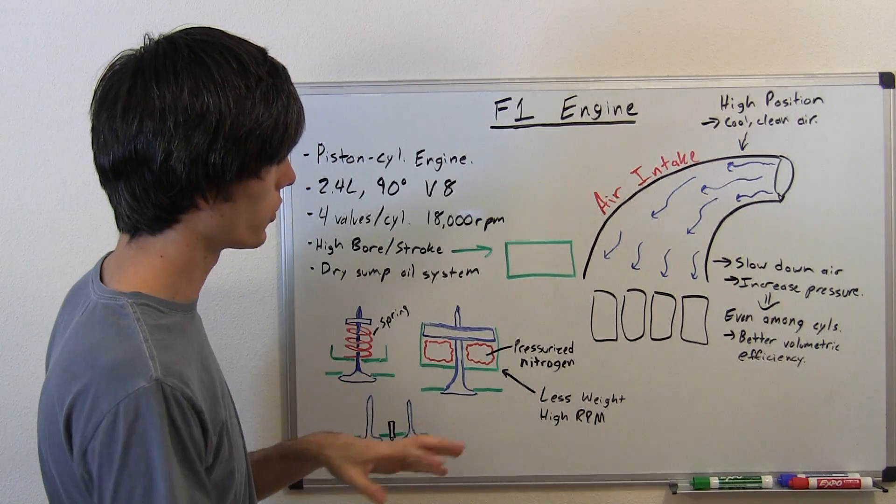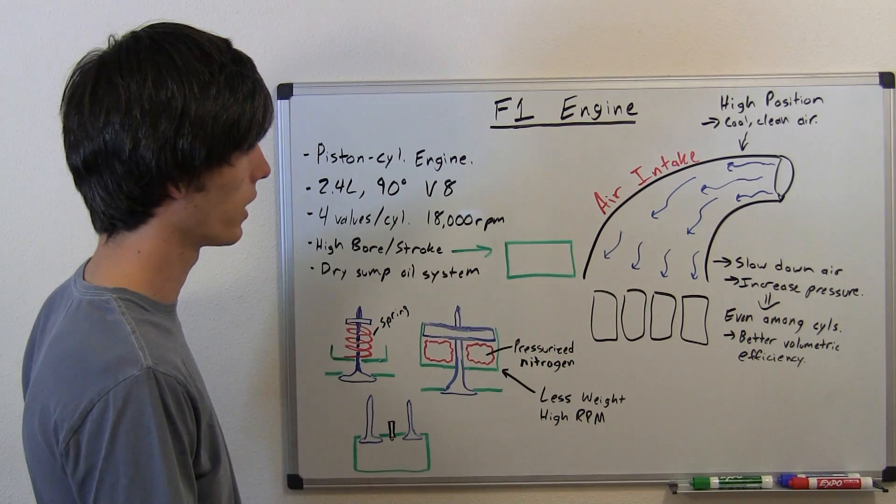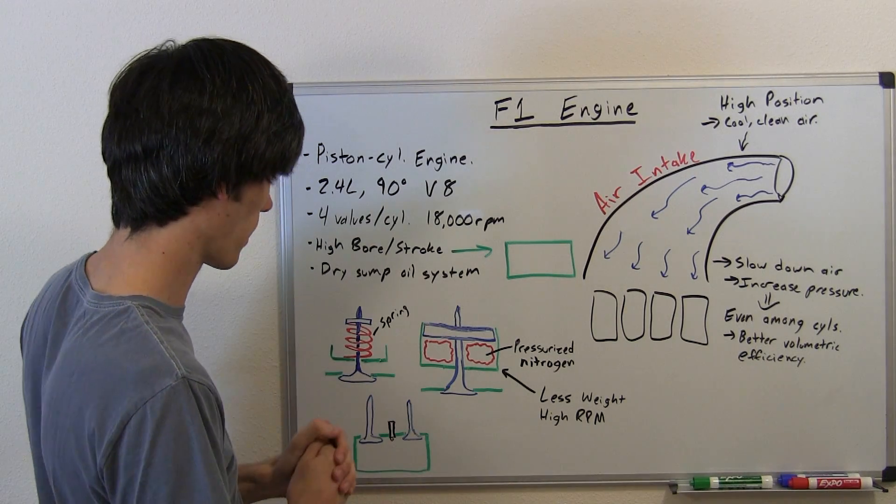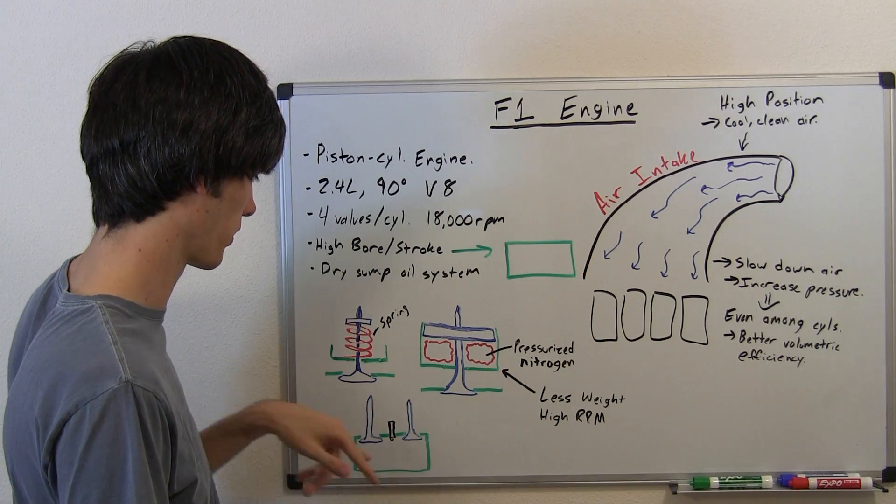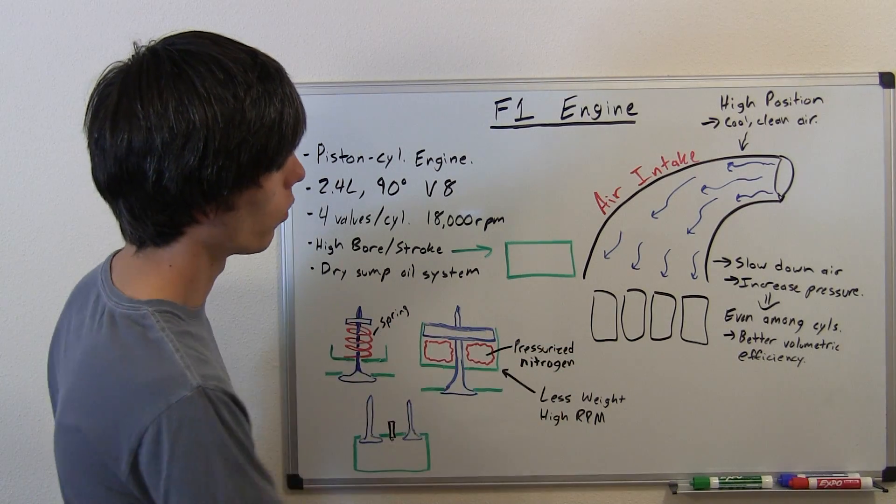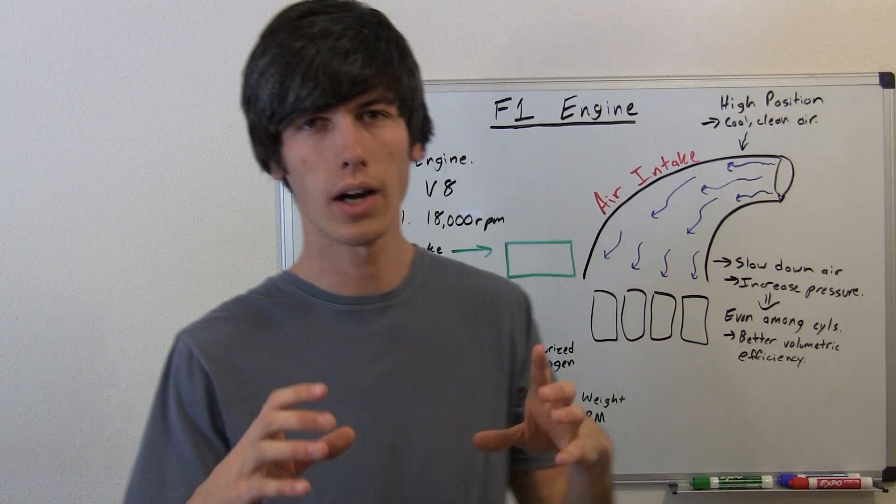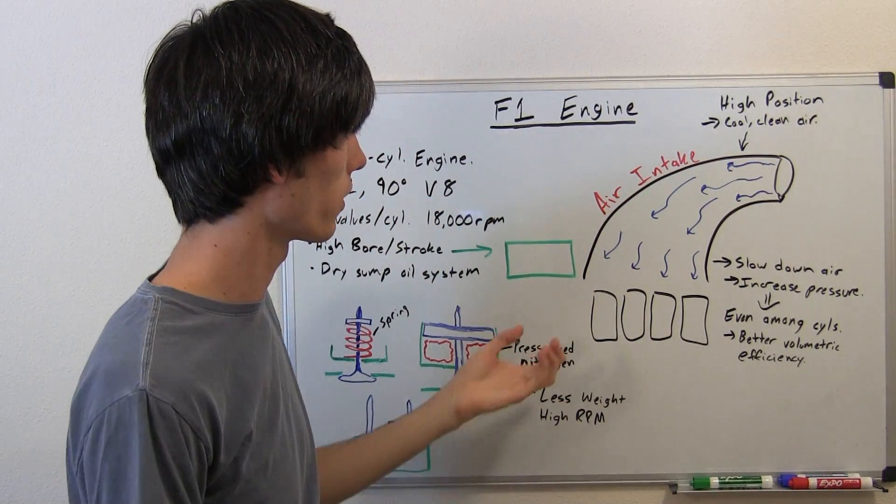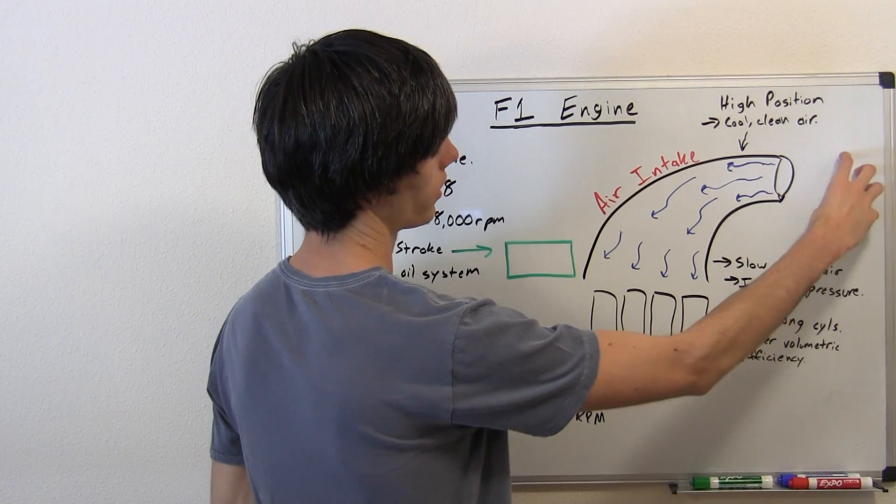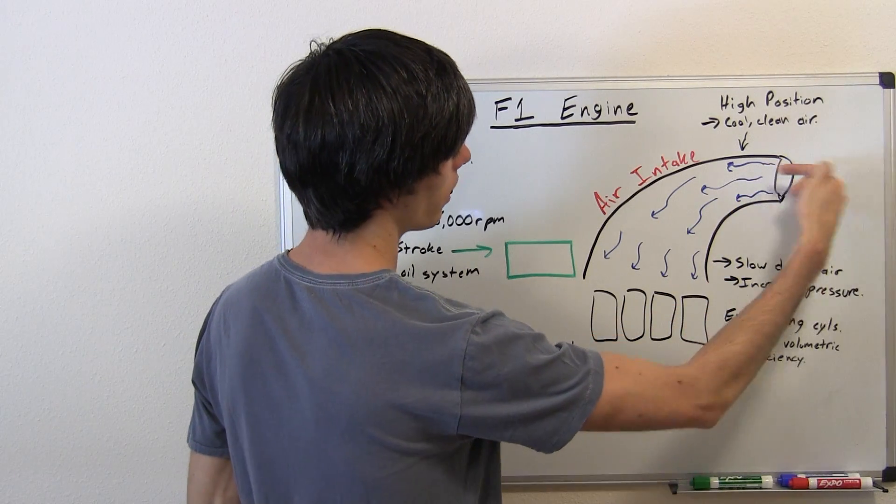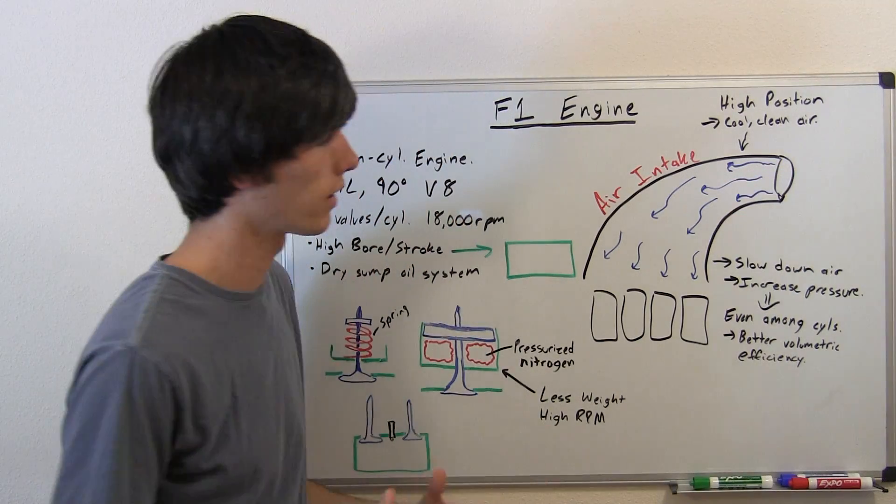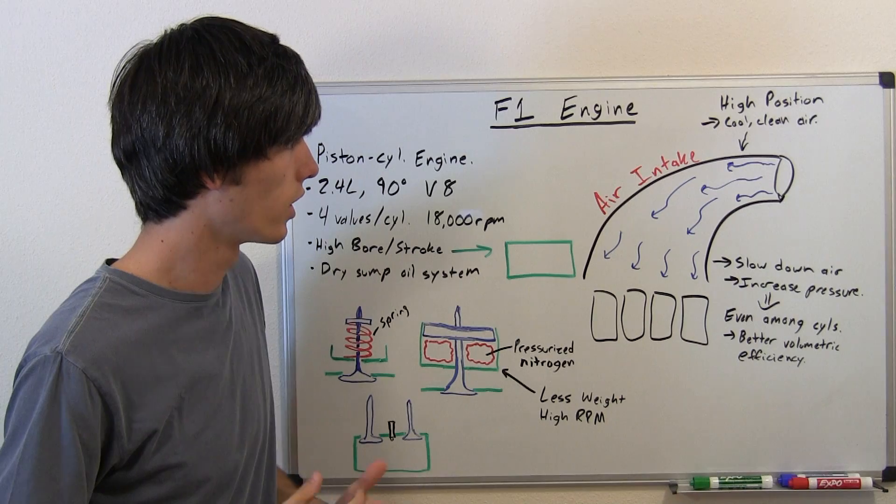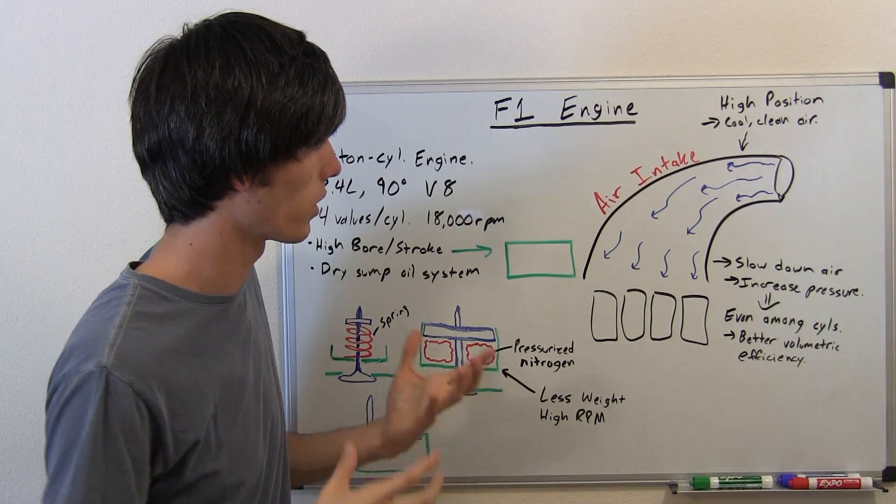So two big differences that I'm going to go over with Formula One engines that are different from your everyday, like what I've got in my Acura four-cylinder engine. So one thing is the air intake. So if you notice when the drivers are driving, they've got that hole right above their head, that's the air intake for the engine. So what it does is it acts as a diffuser. So that high, fast moving air goes in. A lot of people think that it's kind of to ram the air in and act kind of like an air ram, which it's not really, that's not really what it's for.